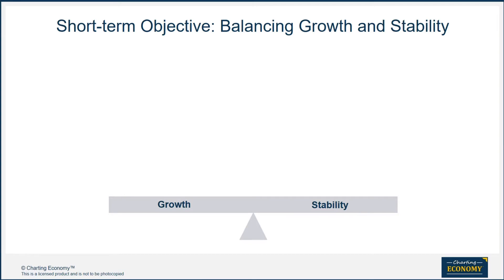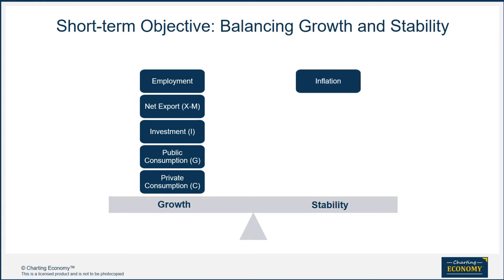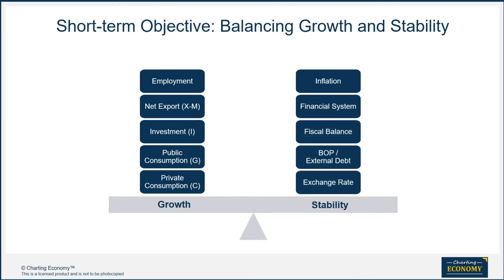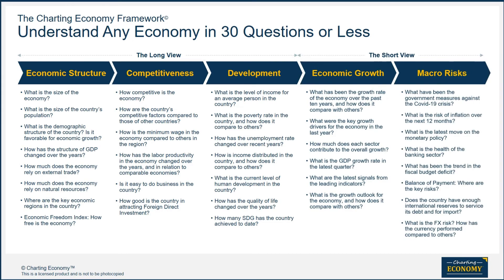The short-term objective of economic policy makers is to balance growth and stability. They can stimulate growth through four engines on the expenditure side: private consumption, public consumption, investment, and net export. Increasing employment is usually the immediate target for short-term growth stimulus policies. On the other side, policy makers have to watch out for inflation and other macroeconomic stability issues, such as the financial system's health, fiscal health, balance of payment, and the exchange rate. As spectators, we ask questions about these issues and only pick relevant indicators that help answer them.